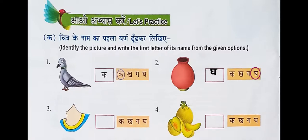And you know very well what the third picture is — it is Gardan. G is the correct letter; you have to circle that and write it in the box also. The fourth picture is Karbooja — K se Karbooja. So you have to circle K and write K in the box.